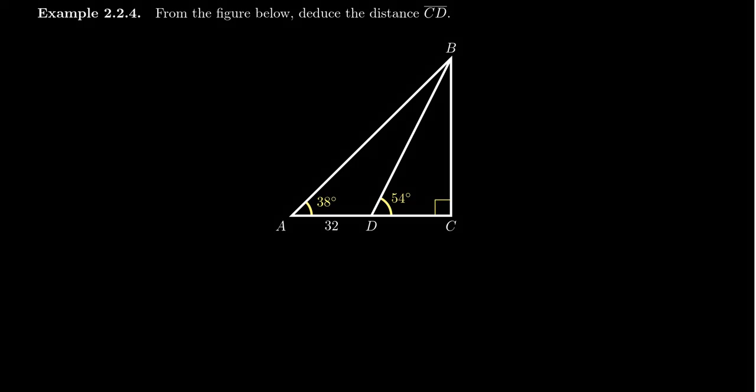Consider the diagram of the triangles given on screen. We have a couple of triangles in play here. We have triangle ABC, which is a right triangle since angle C is a right angle, and we know that the measure of angle A is 38 degrees.